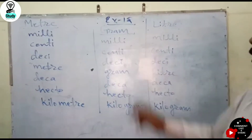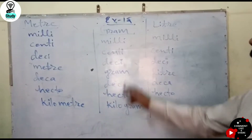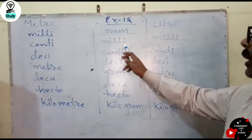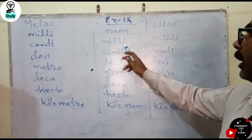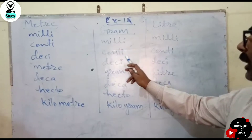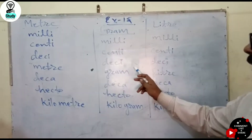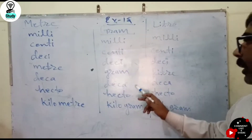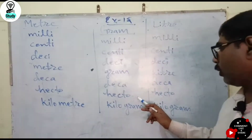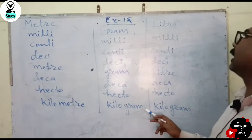In Units of Mass: first Milligram, Centigram, Decigram, Gram, Decagram, Hectogram, and Kilogram.